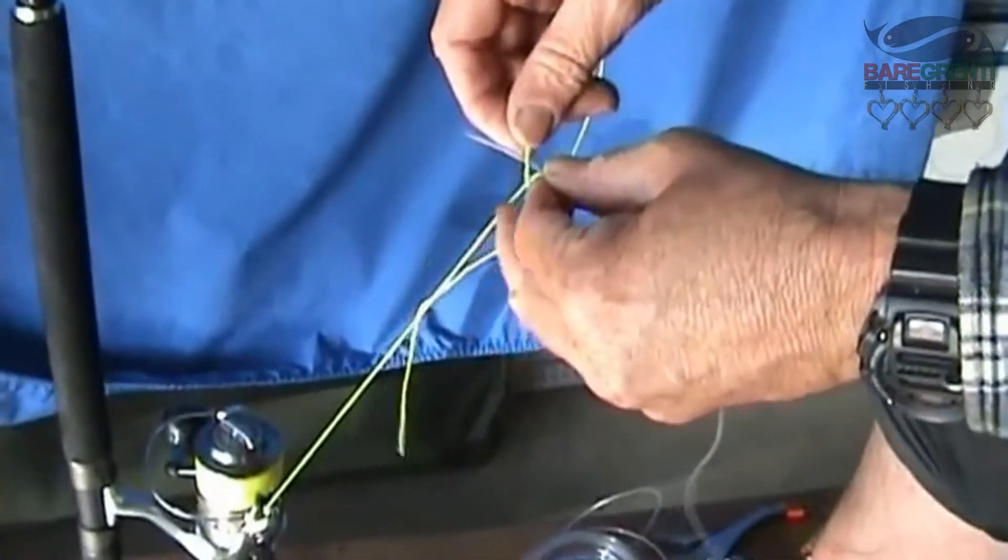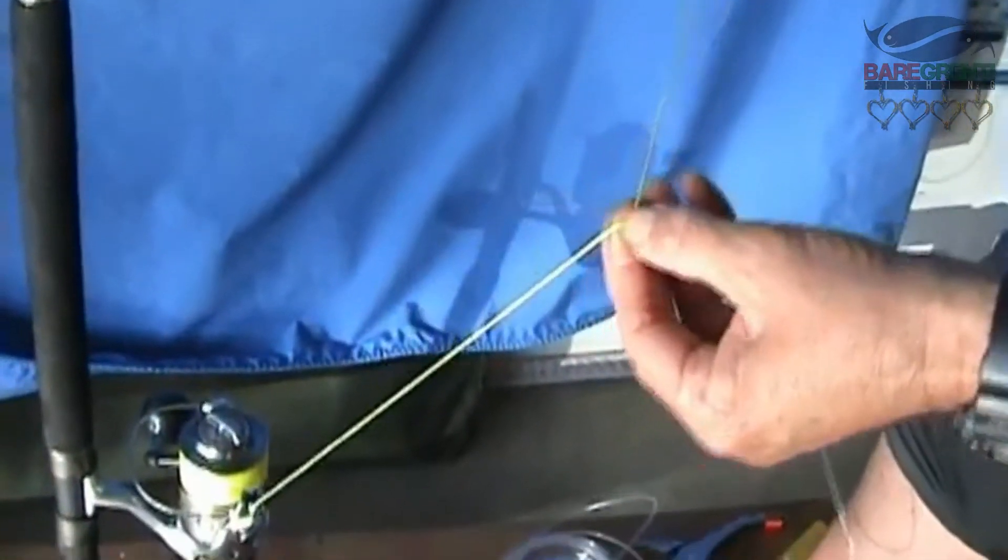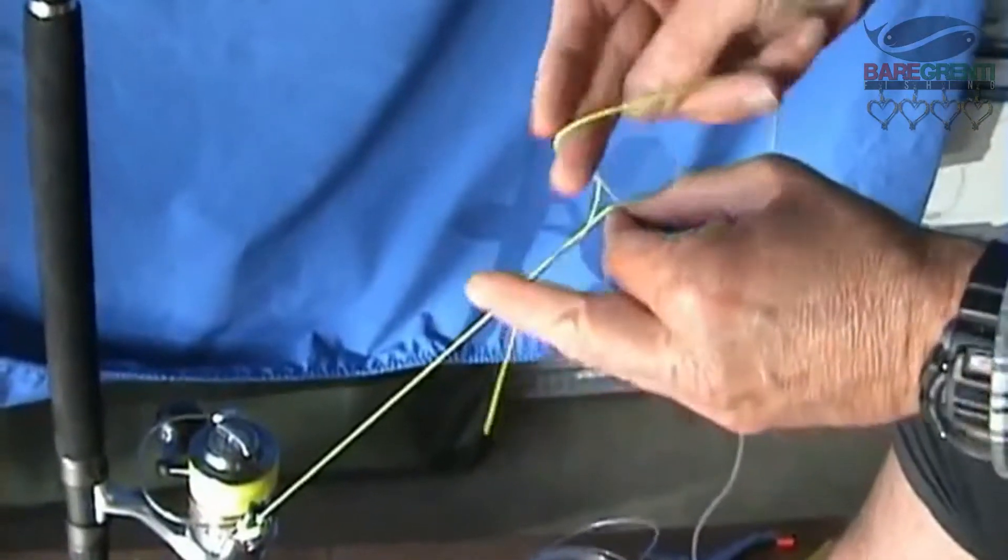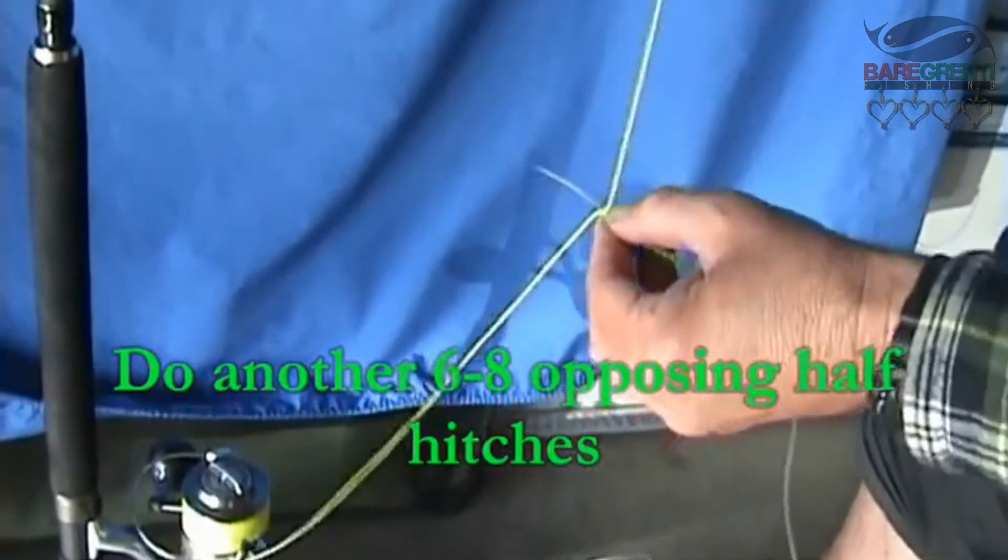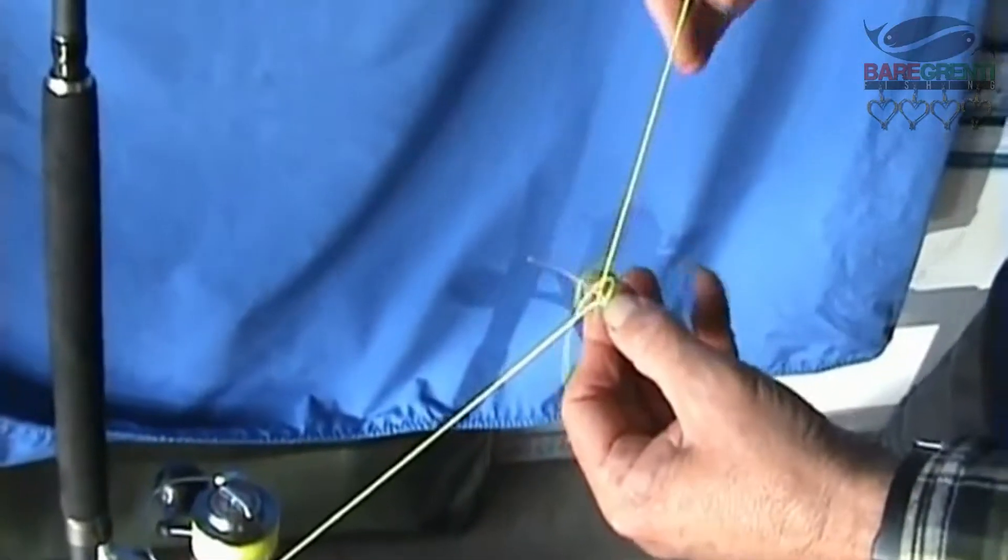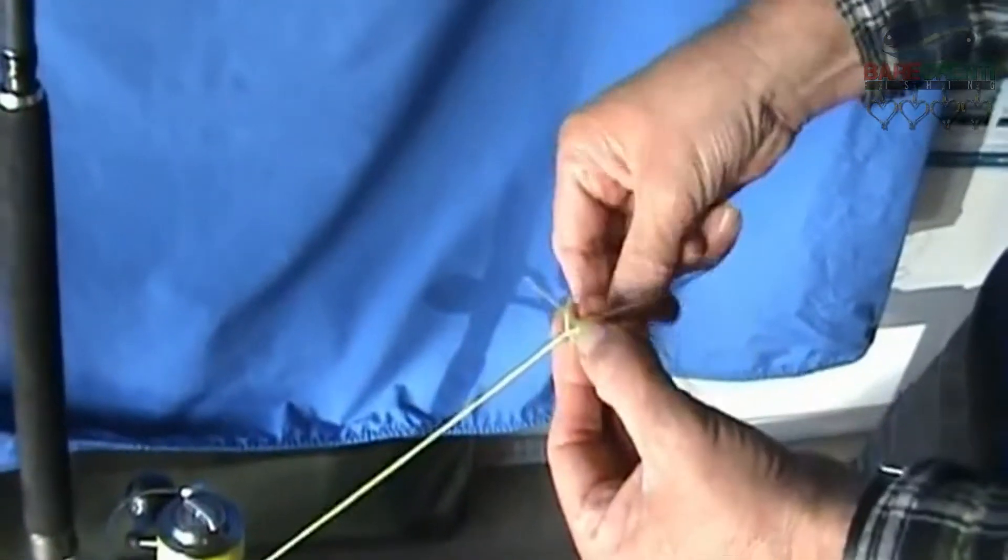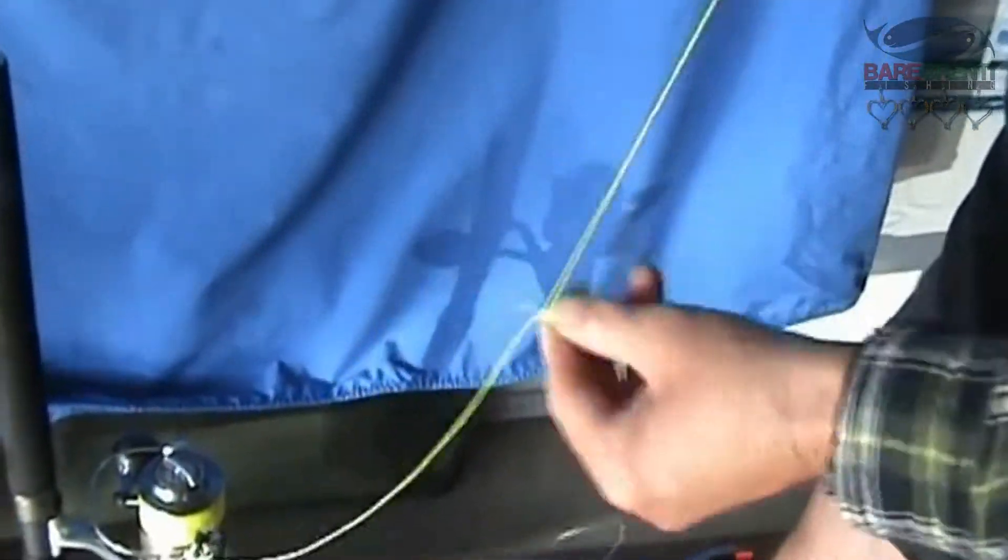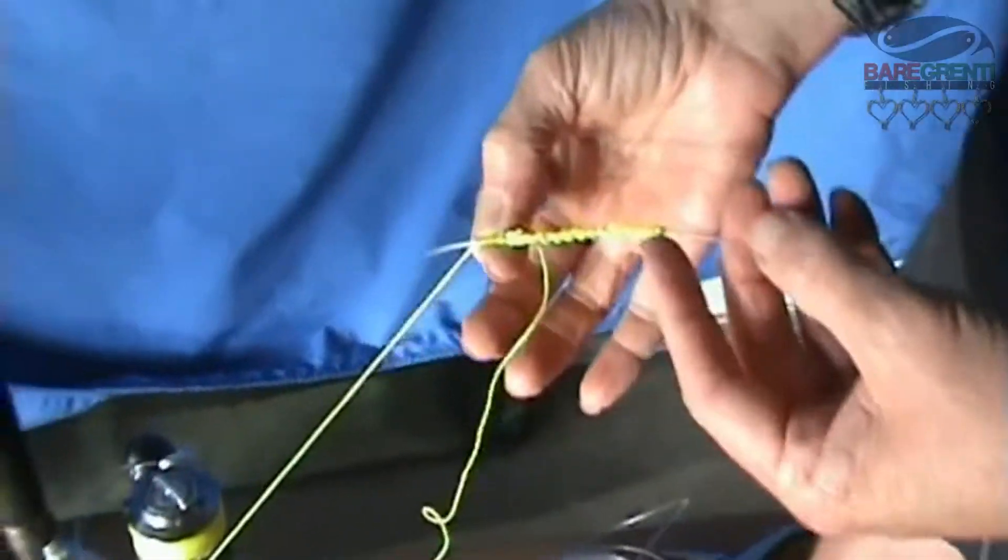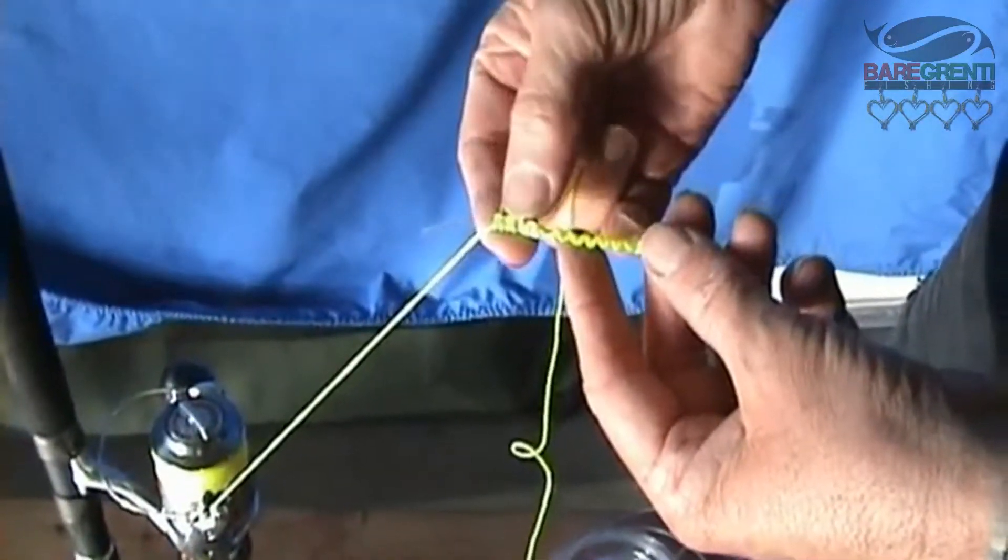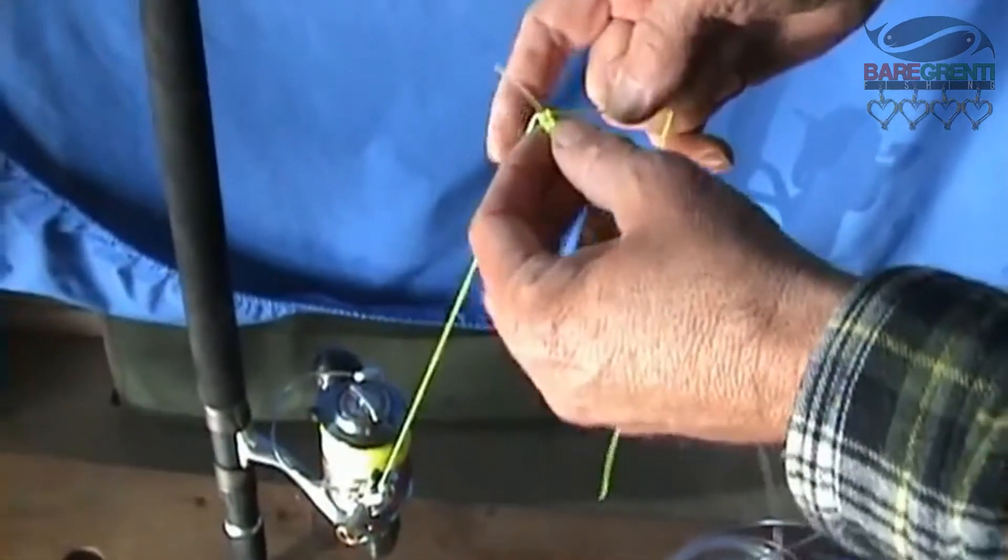Now we're going to do another half dozen of these opposing half hitches. Pull each one up. I've got half hitches down here. We're going to tidy the finish and knot it off.